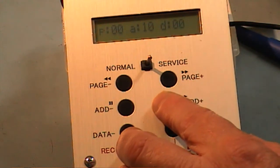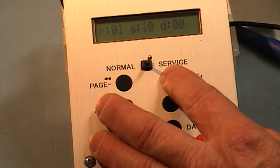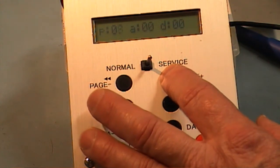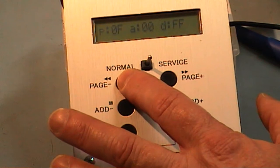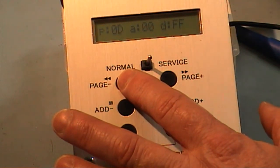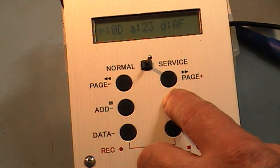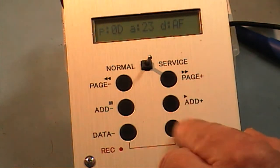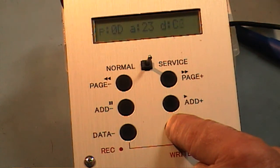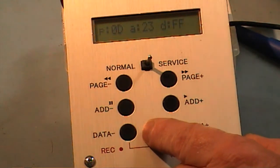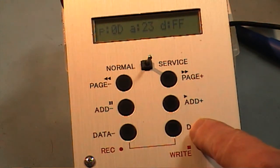Now we have to go to page D, address 23, and change the data to FF. And now I have to press the data button down here to write that value.